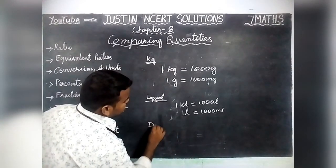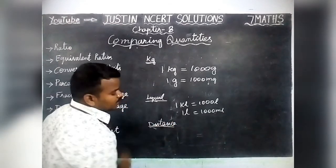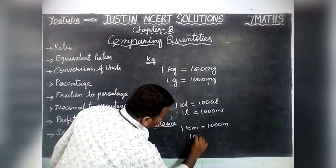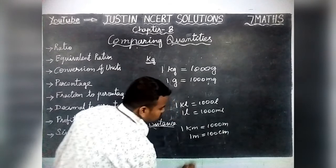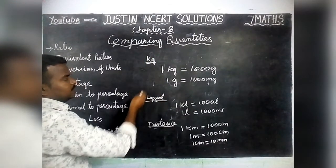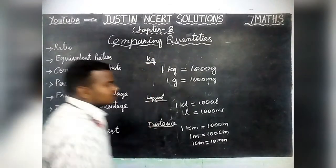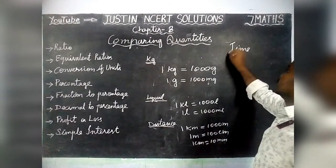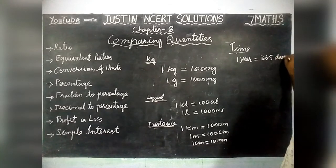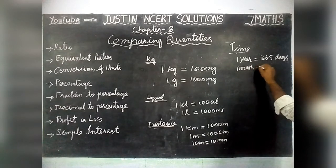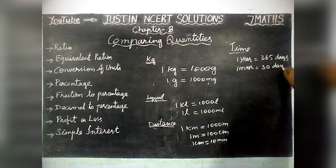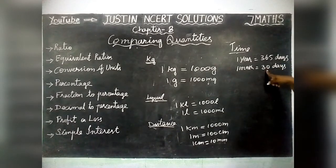Next, if we are measuring Distance — 1 Kilometer is equal to 1000 Metres, 1 Meter is equal to 100 Centimetres, and 1 Centimetre is equal to 10 Millimetres. Time is also very important — 1 Year is equal to 365 Days. We can also say 1 Year is equal to 12 Months. 1 Month is approximately equal to 30 Days.